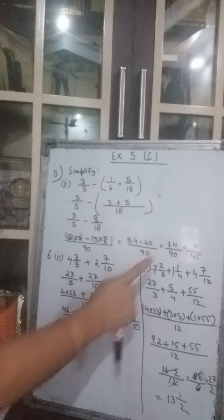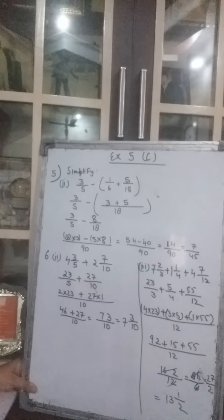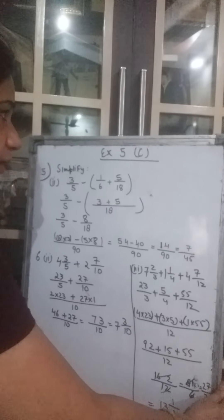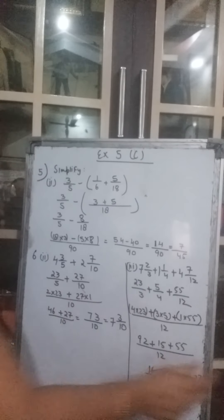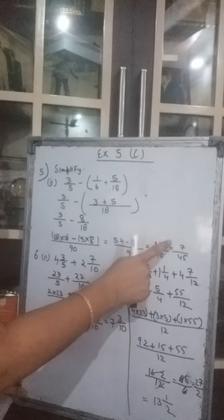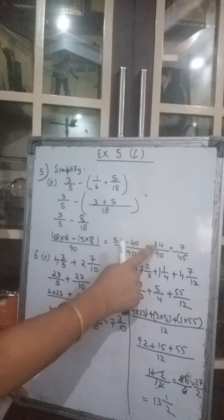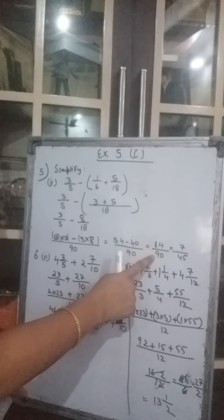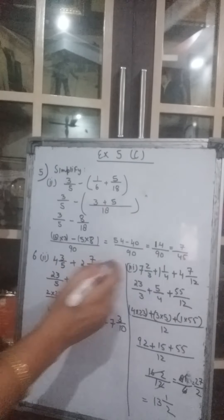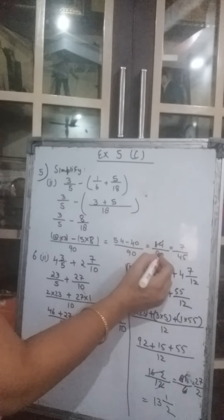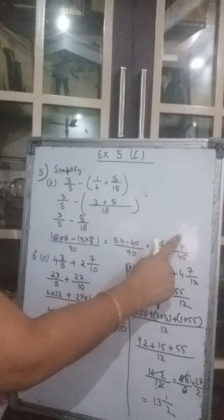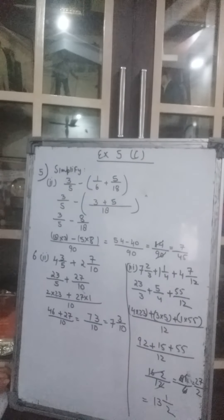So it gives you 14 upon 90. Now you can convert it into the simplest form. We have divided both by 2: 2 7s and 2 45s. So 7 upon 45 is in the simplest form. This is the answer.